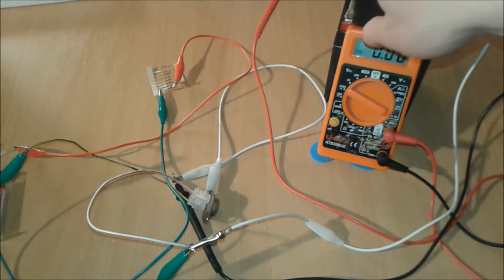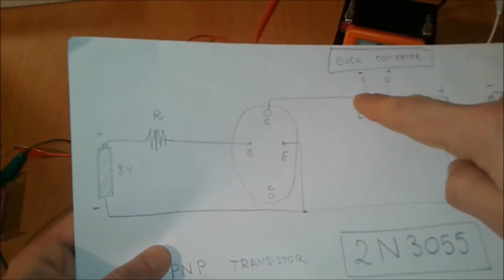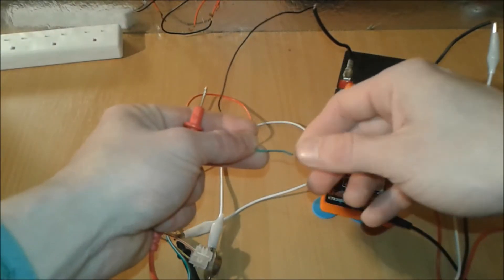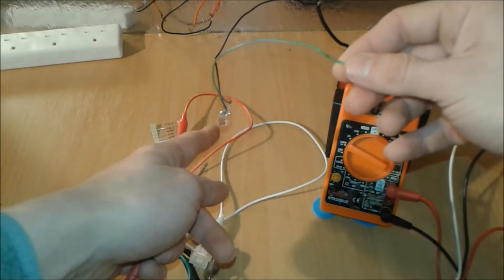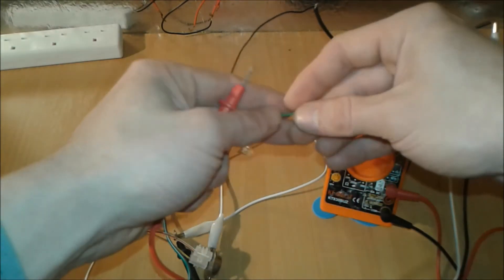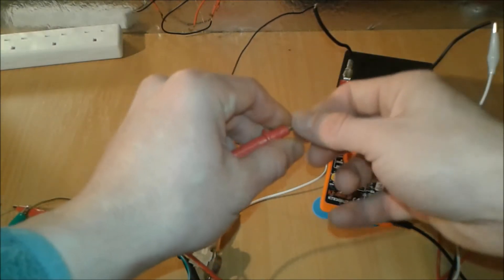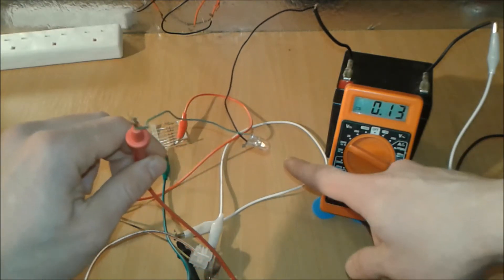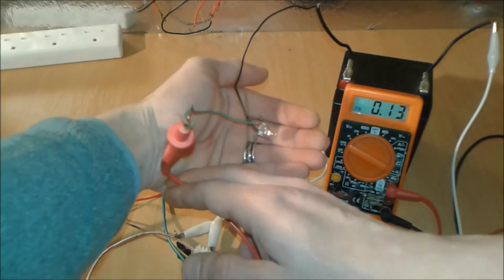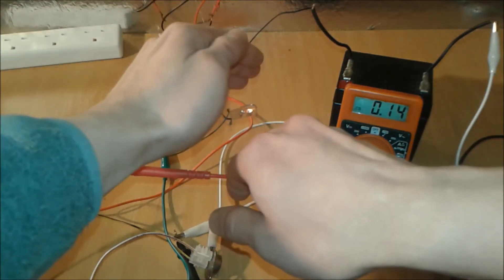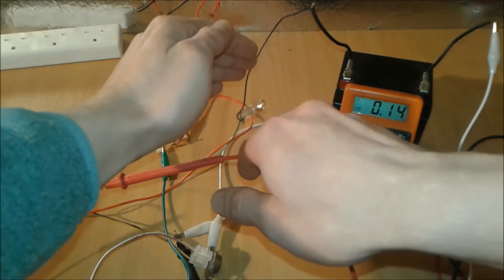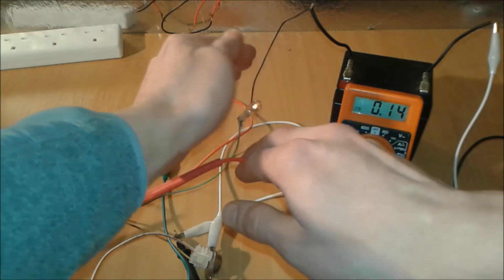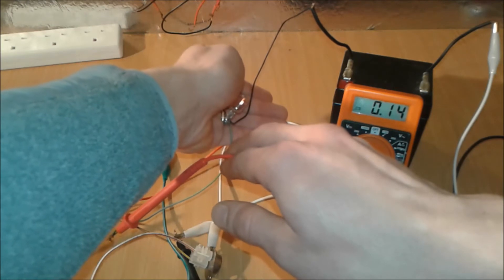We're gonna connect a load right here, which in this case is gonna be after the multimeter to match the diagram exactly. For the load, we're gonna use an old car filament bulb - 12 volts and 5 watts. We're gonna connect it as I showed you, after the multimeter. We turn it on - as you can see, this light bulb is barely lit. It's barely lit but not drawing more than 0.14 amps. Normally this bulb draws around 0.33 amps.